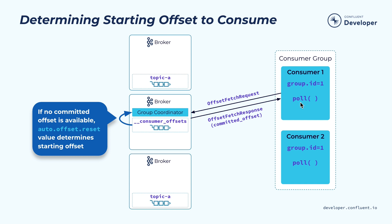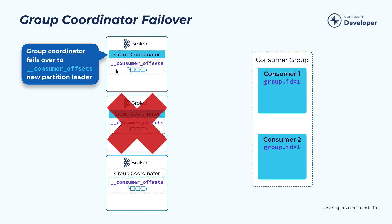If this consumer instance is started for the very first time and there's no saved position for this consumer group, then you can either start consuming from the very beginning of the topic partition or the very latest. The group coordinator can fail, but because the internal offset commit topic is replicated, the group coordinator, if it fails, can easily fail over as the new leader for this internal topic partition. So we can handle failure in a pretty resilient way.